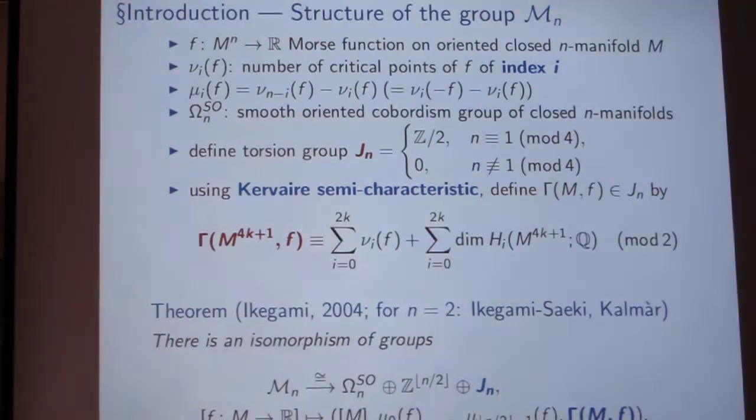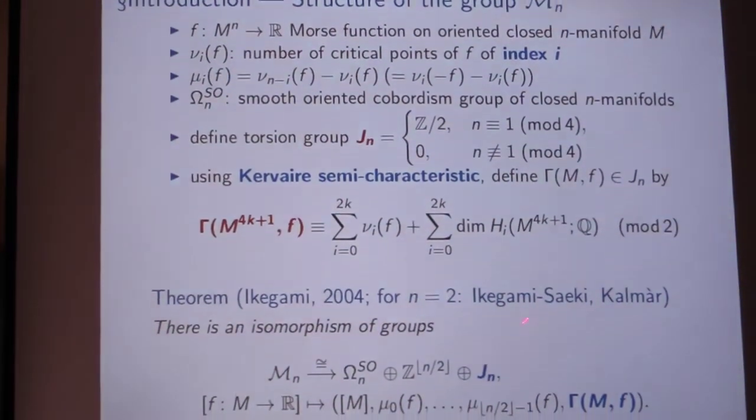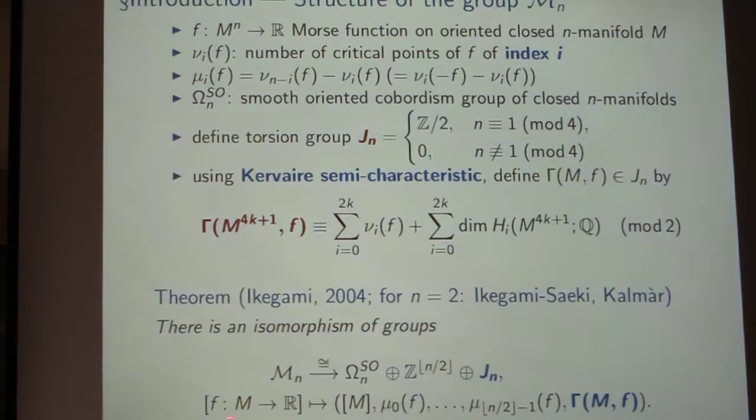So using these notions, there's the following theorem from 2004. The case that n equals 2 has previously been studied by Ikegami and Saeki, and an unoriented version by Kalman. The theorem states that the cobordism group of Morse functions is isomorphic to the following structure. The first summand is the cobordism group of manifolds, then a certain number of direct Z summands appears, and thirdly this torsion group J_n, and the isomorphism can be written down explicitly like this. In the first component you just remember the manifold, the class of the manifold itself in the cobordism group, and then you extract those differences of indices from the Z summands, and the last summand is just given by the invariant defined above.